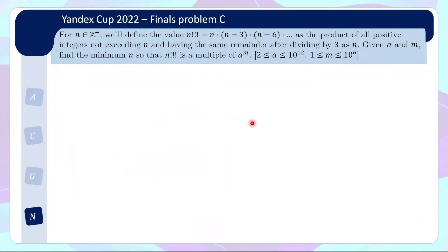This problem is taken from the final round of the Yandex Cup, which is a competitive programming competition that has been organized recently. The problem is actually quite short, which is quite rare for a competitive programming question. We have a positive integer n, and for such a positive integer, we'll define the value of n triple factorial as what you'd expect — basically, you start from n and go down by 3 at each step, covering the product of all positive integers not exceeding n and having the same remainder after dividing by 3 as n. For inputs, you're given a and m, and you're supposed to find the minimum n such that n triple factorial is a multiple of a to the m.